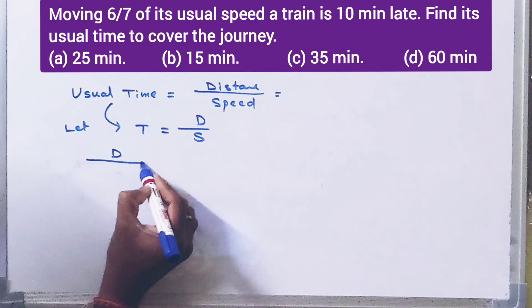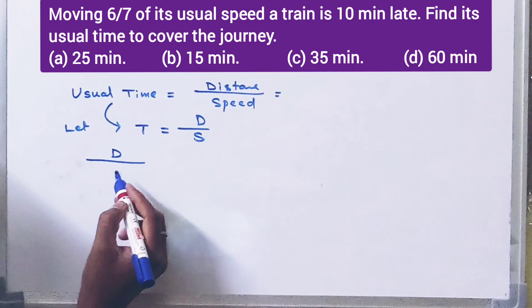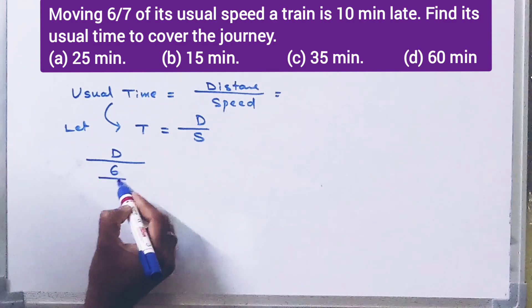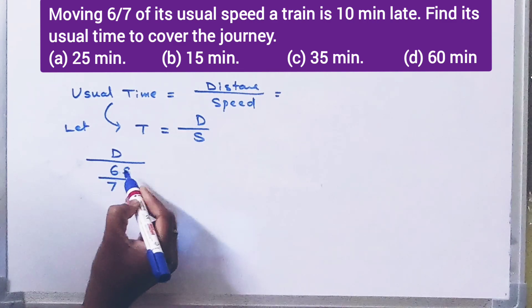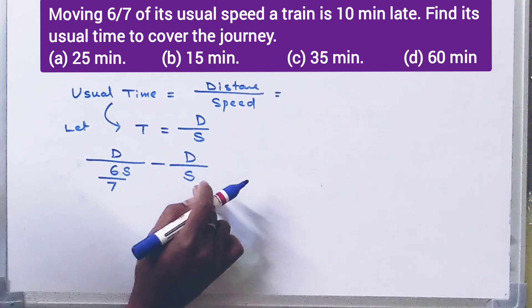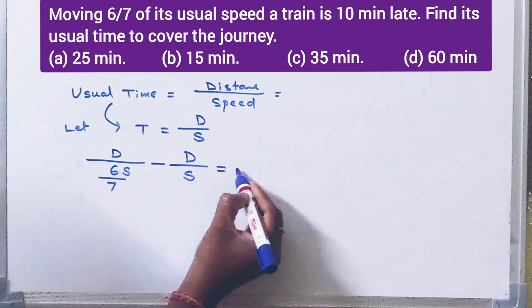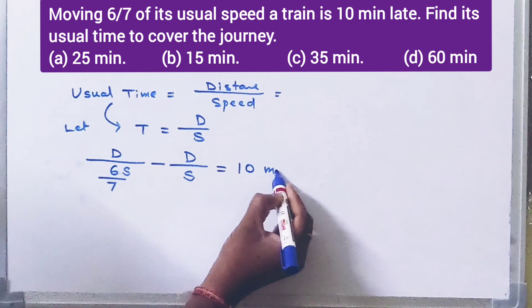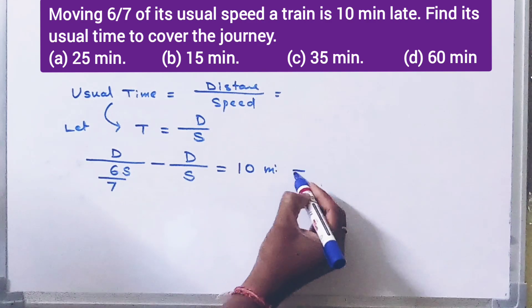Next, we have moving 6/7 of its usual speed. So D by speed is 6/7. So 7D by 6S minus D by S, which is usual time, is equal to 10 minutes.